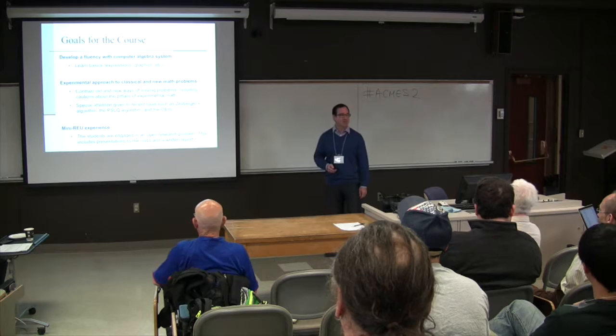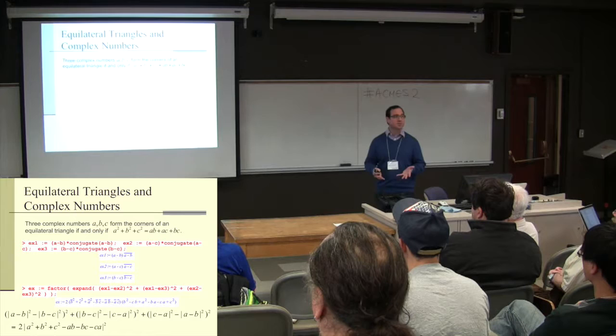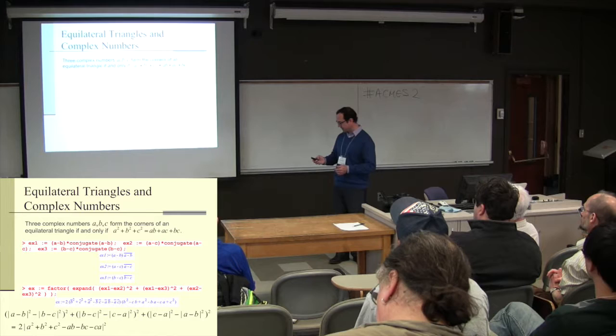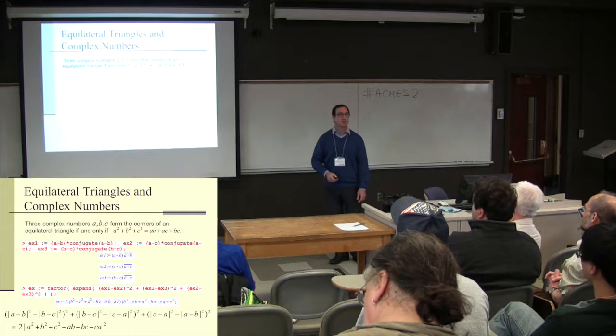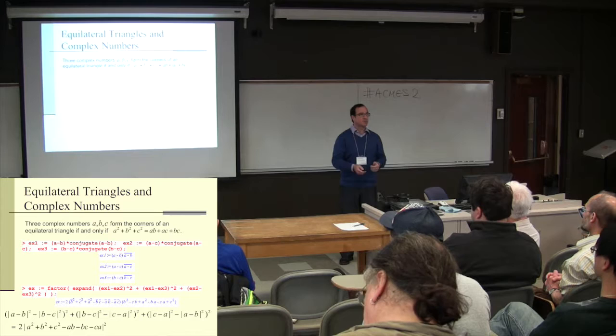Here's an example. You have three complex numbers A, B, C — points in the complex plane — and the claim is those three points form the corners of an equilateral triangle if and only if a certain equation holds. You might imagine a traditional approach: making a figure, identifying the center of the triangle, and working from that.